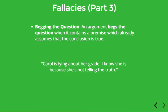For example, consider this argument: Carol is lying about her grade — I know she is because she's not telling the truth. Now, suppose you were trying to convince someone that Carol is lying about her grade. Normally, we assume that an argument is directed towards someone who doesn't already agree with your conclusion. If you don't already believe that Carol is lying about her grade, then you're not going to believe that she's not telling the truth. The premise and the conclusion basically state the same thing, so obviously that doesn't make for a very persuasive argument.